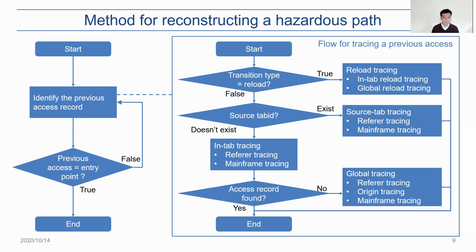If we can find a proper previous access, we end the process. If not, we run the global tracing method. The global tracing method is not often called because most previous accesses are identified before reaching it. It finds the previous access by referral or origin information, or by the latest path mainframe access record. This process is not too heavy because we can discern browser tabs and users — we only need to analyze access records inside one tab of a user, which is the key advantage of our scheme.